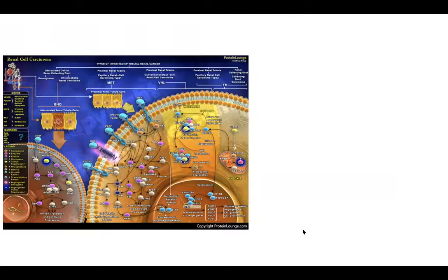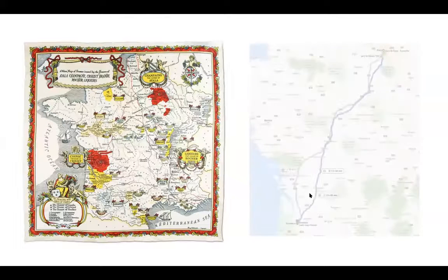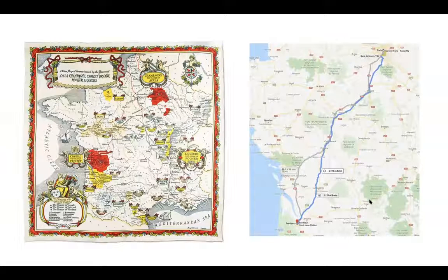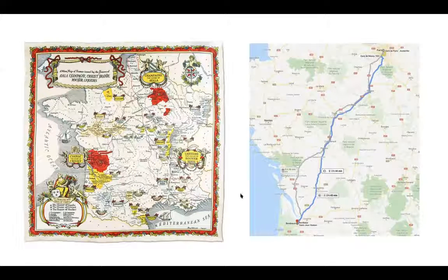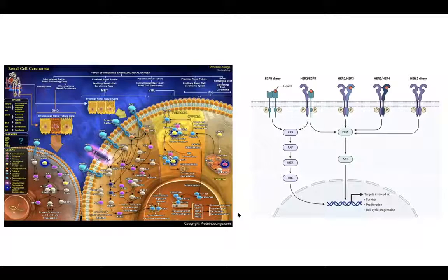I equate this to an artistic map versus a directional map. The wine regions of France is beautiful to print and put on a wall, but if you're in the south of France you'd want a directional image showing how to get from point A to point B. Building pathway diagrams should work the same way — stripping away what you don't need and keeping what is necessary versus what is nice to have.